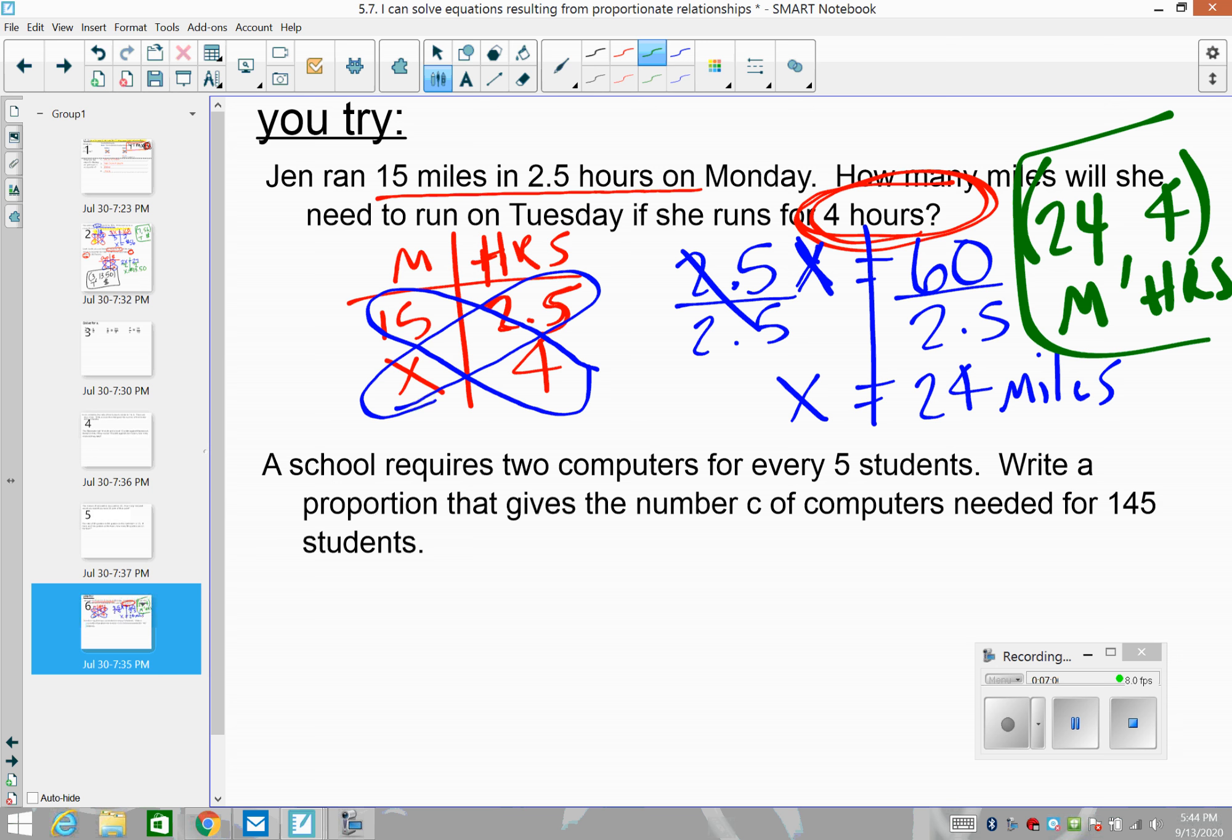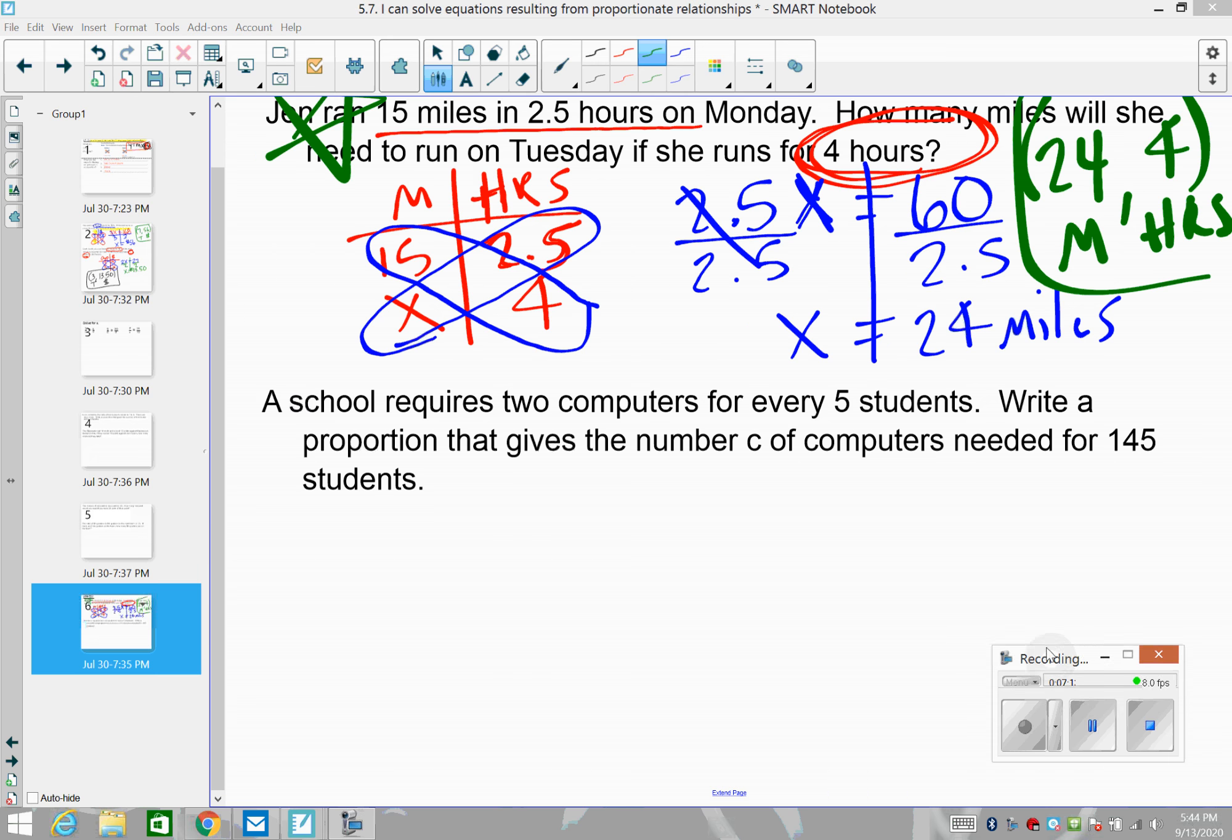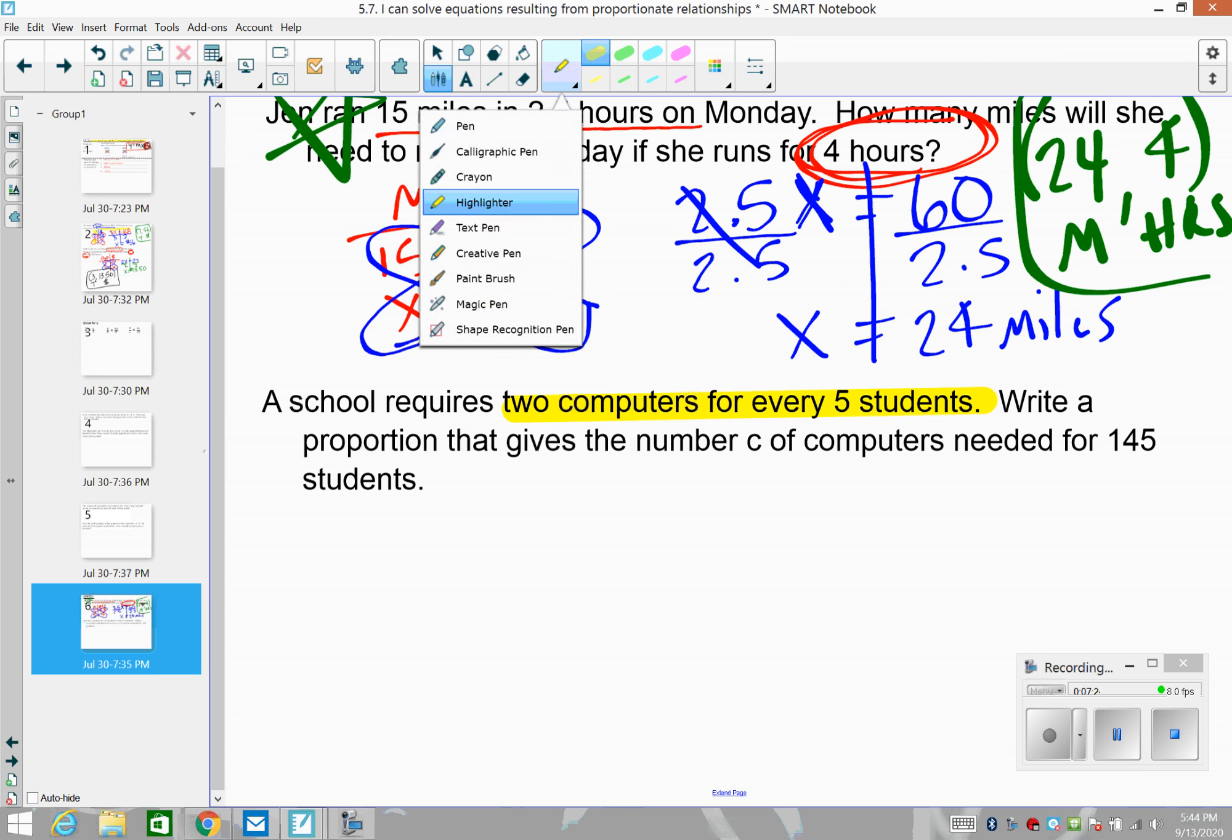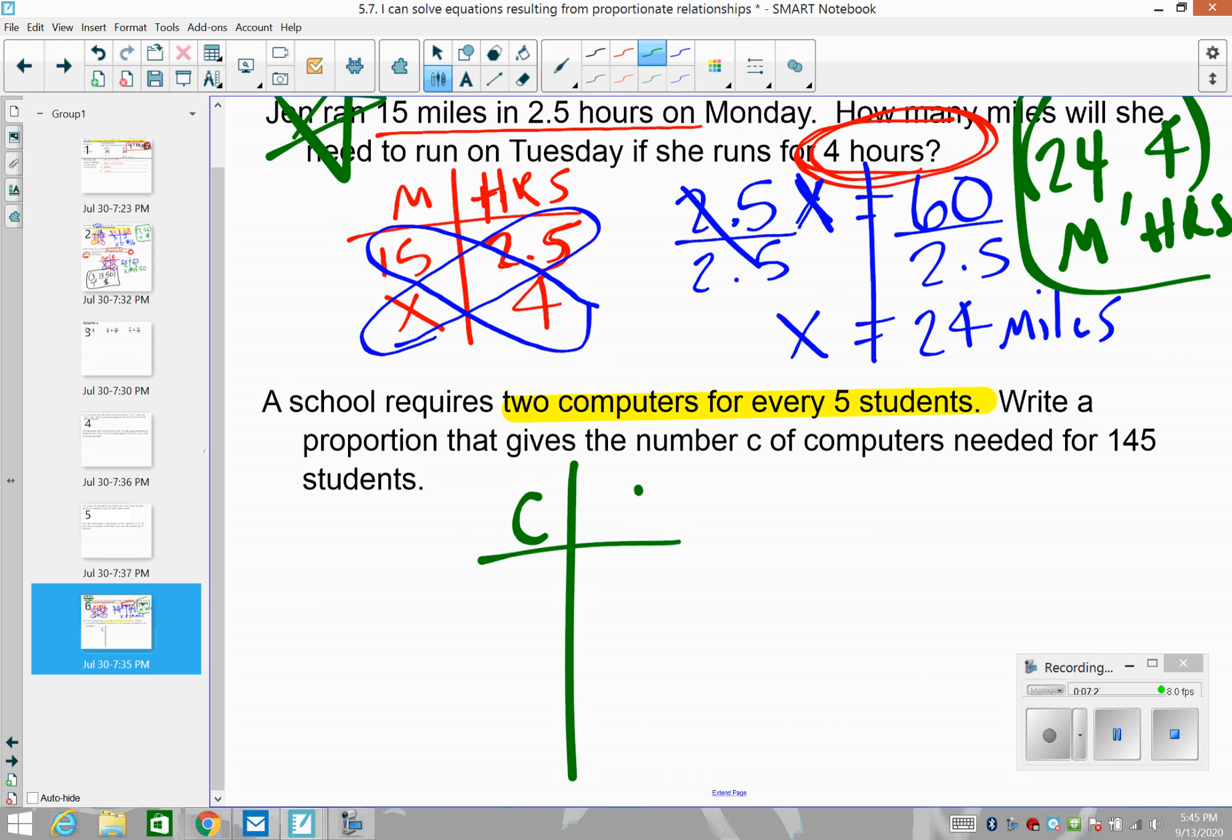Hopefully you did really well on that problem. You can give yourself a big star. Let's try the problem on the bottom. You should have already solved it. If not, pause and solve now. Let's make sure you're trying these. It's important that you know how to do proportions. A school requires two computers for every five students. So what I'm hearing there are computers and students. Any order is fine. Two computers, five students.